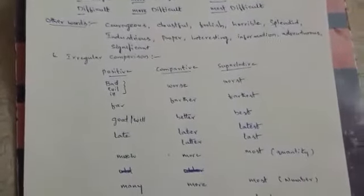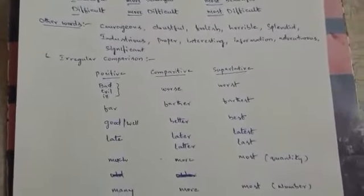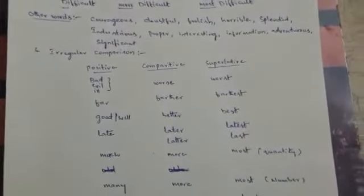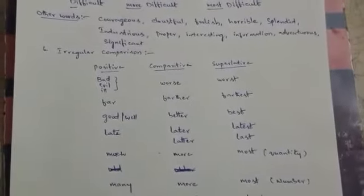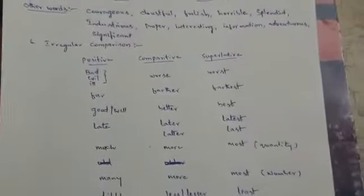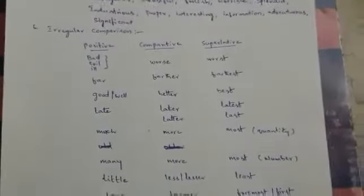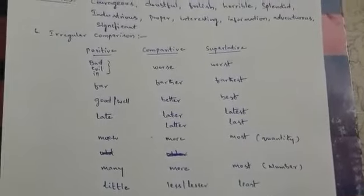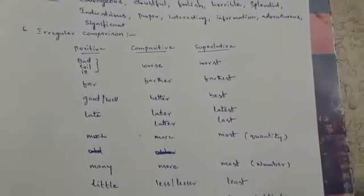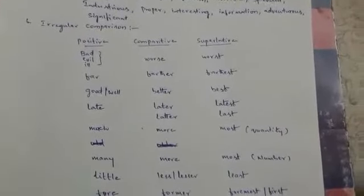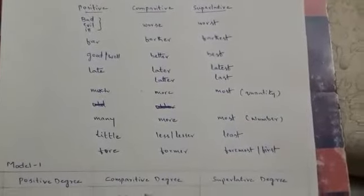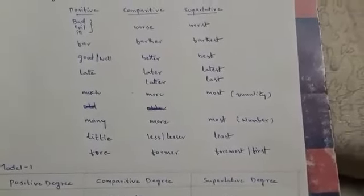The last kind is irregular comparison. That means, they are not followed in a particular way. The positive, comparative and superlative may be entirely different. You can say that, bad, evil, ill as positive. In comparative, they become worse. And in superlative, worst. Far, farther, farthest.